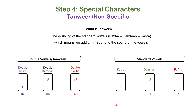In short, that is all there is to tanwin. One quick note: the double dhamma is written in a special particular way, but you can also just write two small dhamma symbols next to each other and it still suffices. However, you will mostly see the double dhamma written in this special way in most Arabic texts.